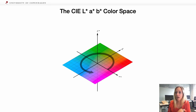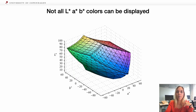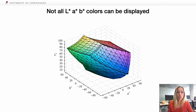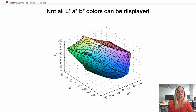It sounds like a simple idea and the implementation looks direct. But no — not all CLAB colors are displayable. Only the part of the space that corresponds to sRGB can be displayed. So this is what you see here: the huge cube is the CLAB color space and the colorful polygon in it is the displayable part that corresponds to sRGB.